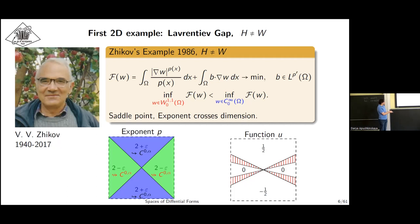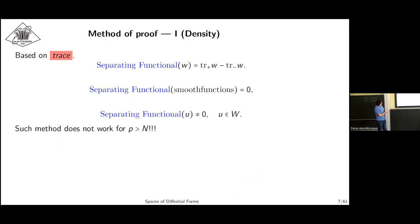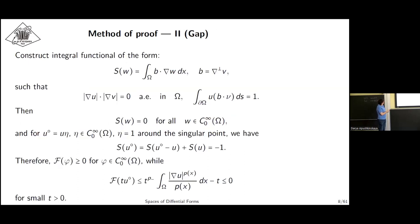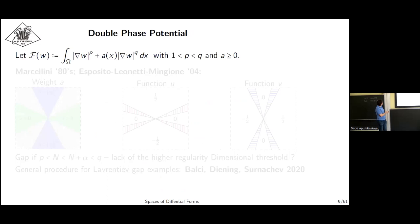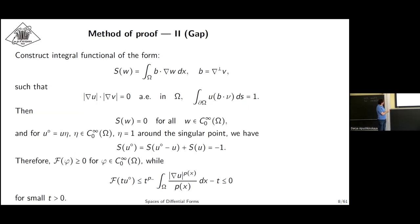This method is based on building a separating functional of this form which is zero on smooth functions but not zero on the special function U. We build separating functional E in this integral form. It was in this paper in '86, and actually we developed this method.